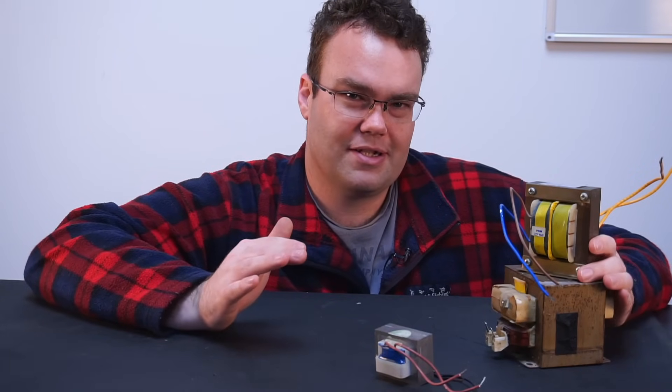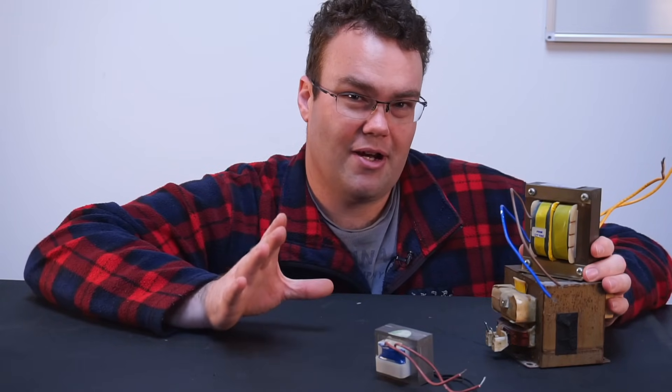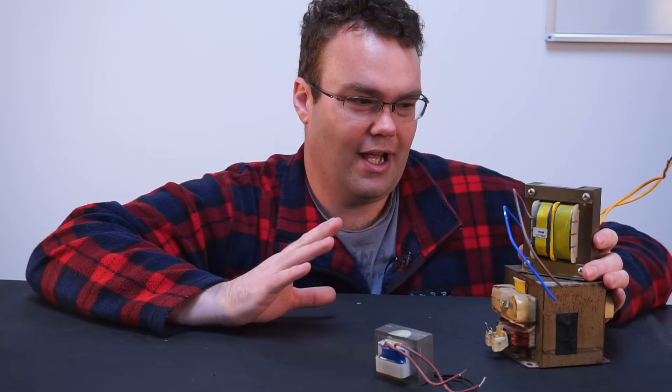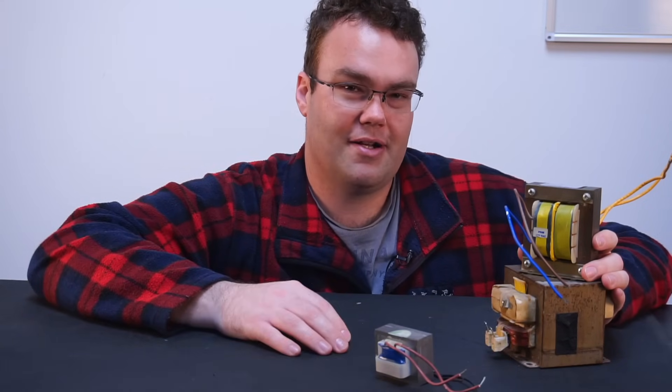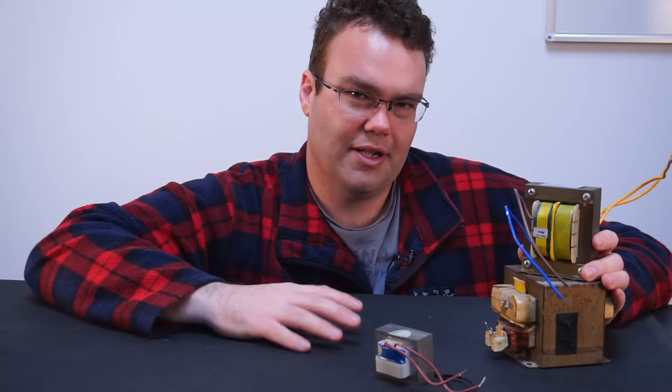What doesn't play a significant role here is voltage. So if our goal is to make a really powerful electromagnet, we should select a transformer that has heavy wire for its windings because we're going to be able to pass more current through the wire before it overheats and then ultimately fails.